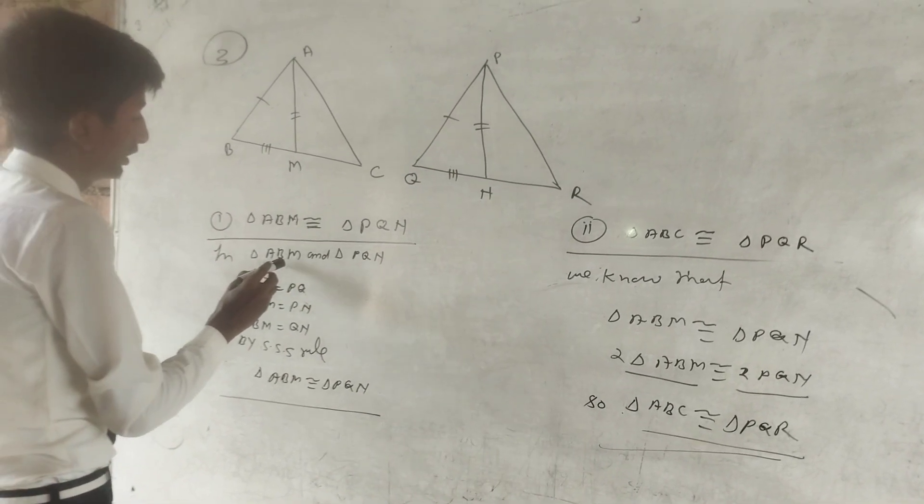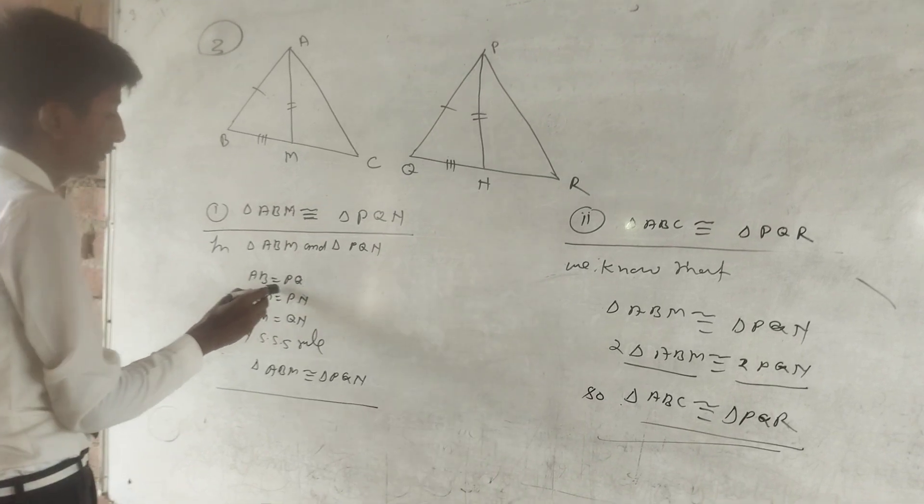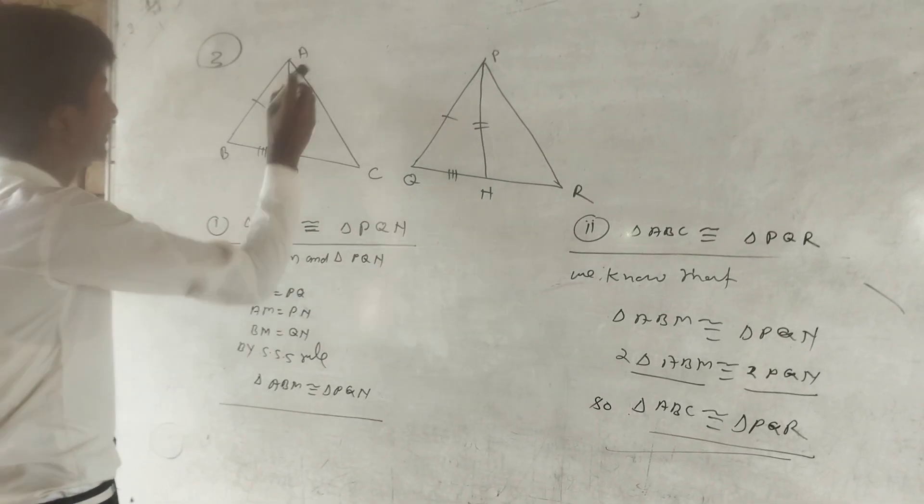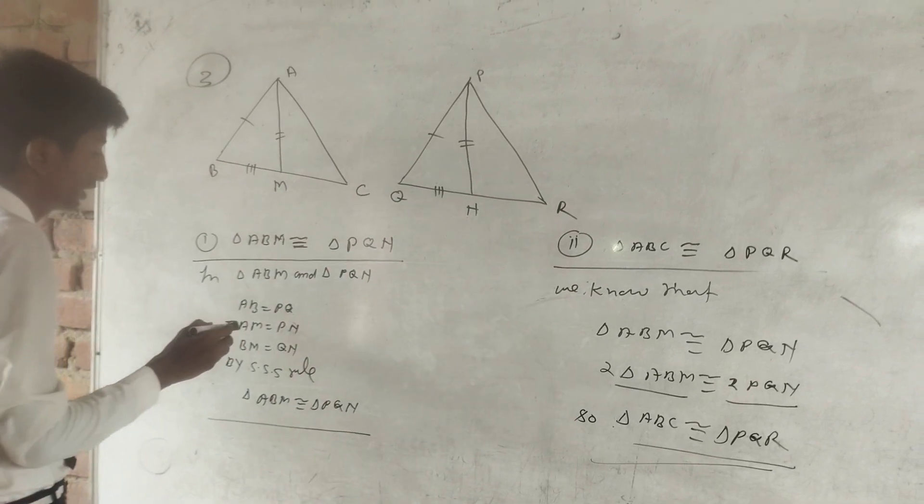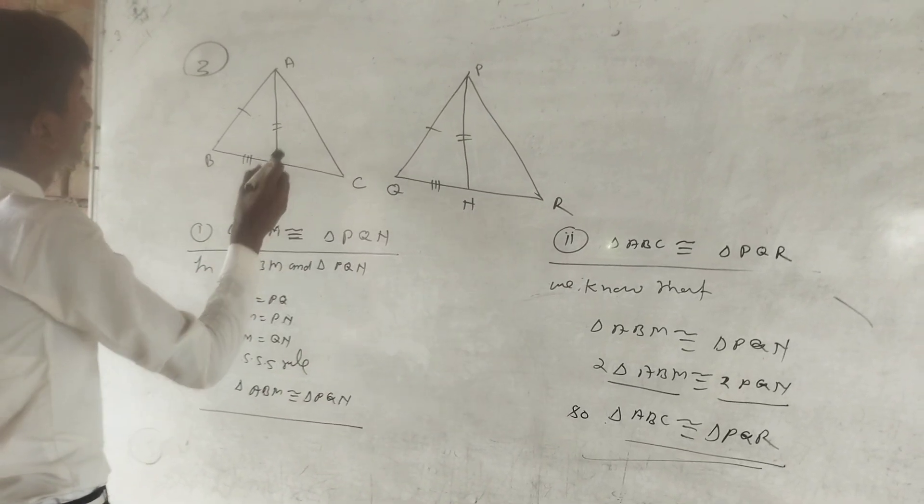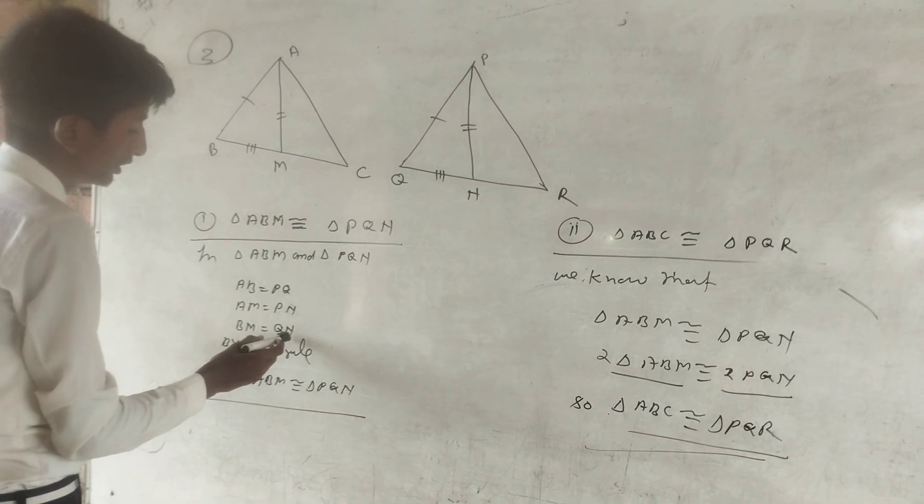Third: angle ABM and angle PQM, AB equal to PQ. Which is given? This is given: AM equal to PN, and given that BM equal to PQ.